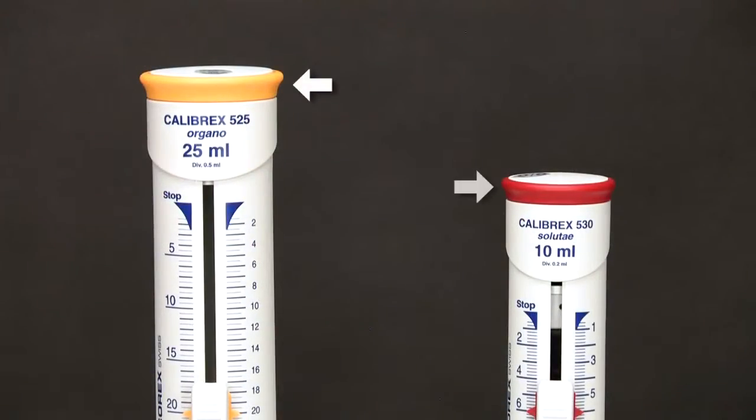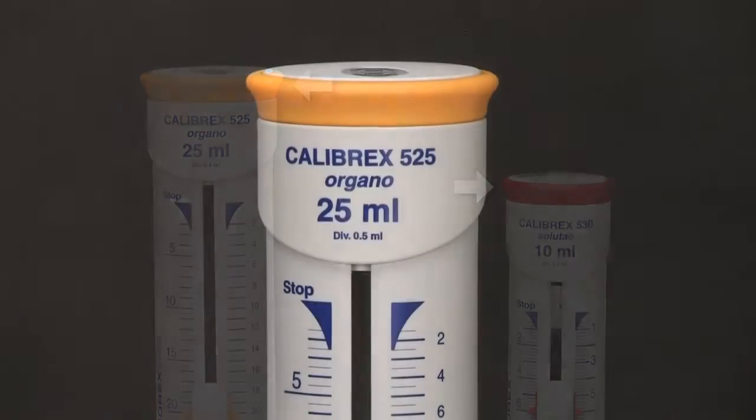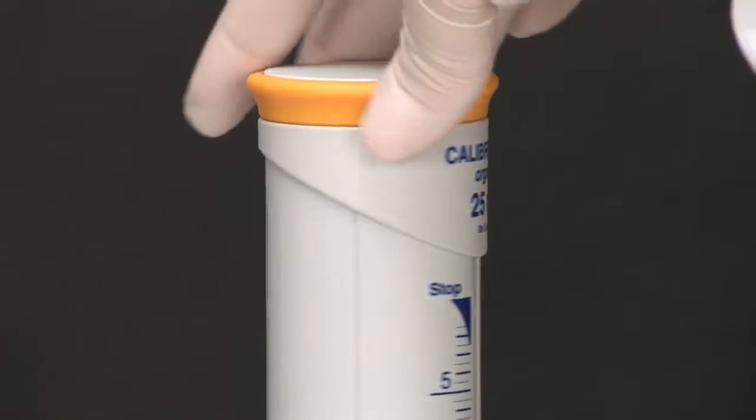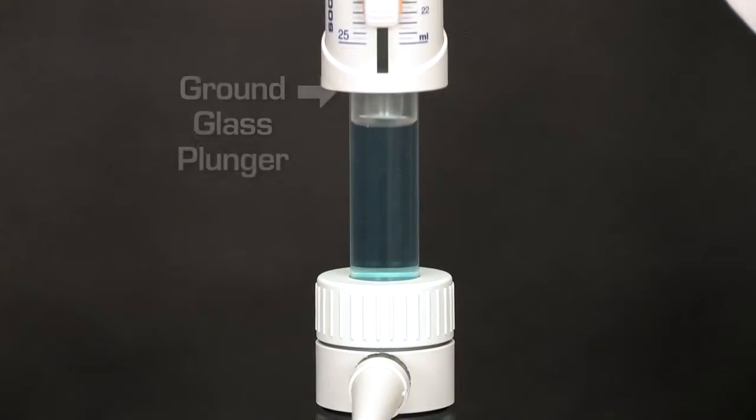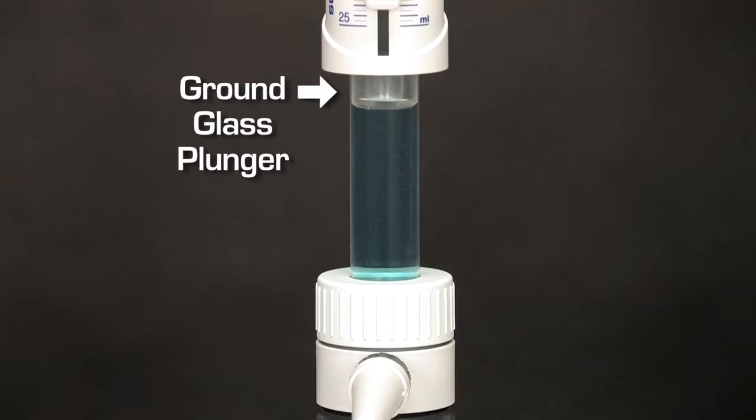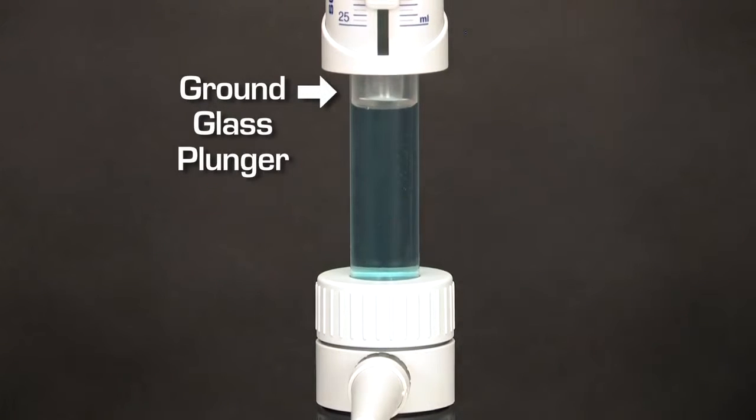Each of the two models is identified with a color code. The Organo model is best suited for organics, non-crystallizing acid, and base solutions because of its ground glass plunger. Models up to 10 milliliters have a ceramic plunger.